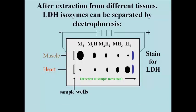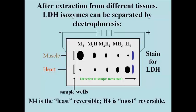It turns out that the M-rich, especially M4 LDH, is the least reversible — in fact, in real terms, it's never reversed. While H4 is readily reversible.